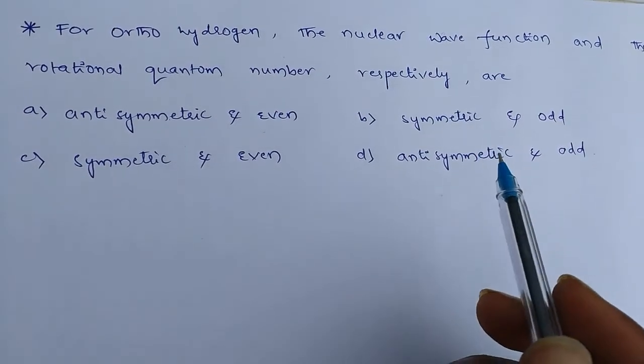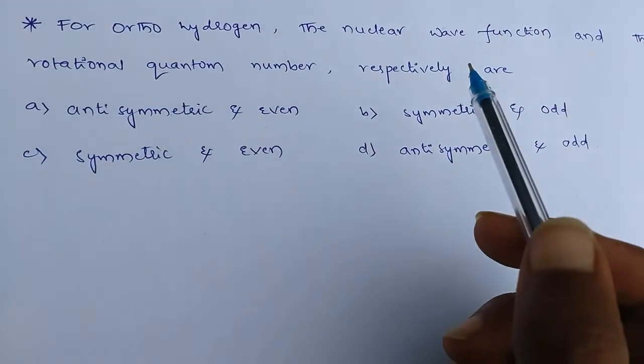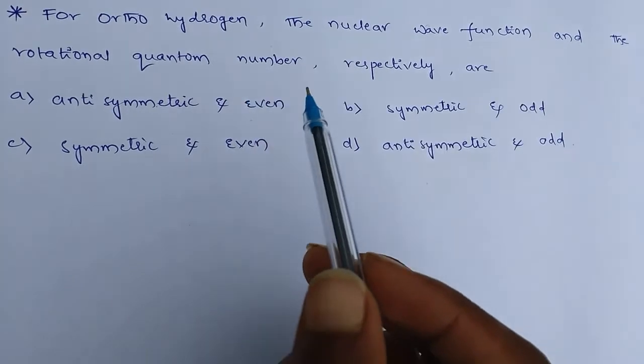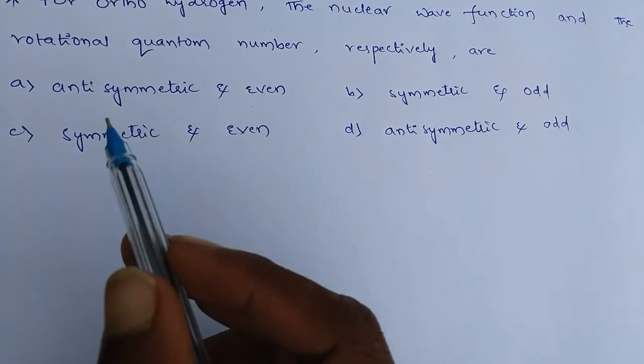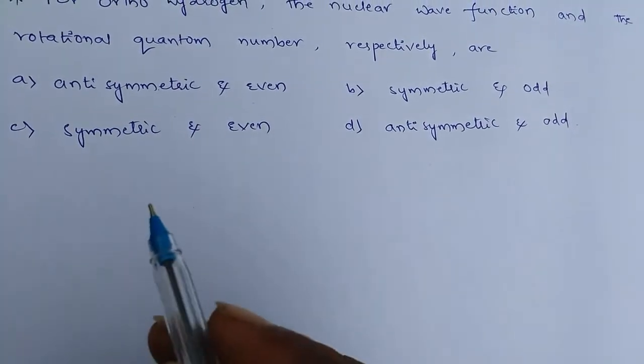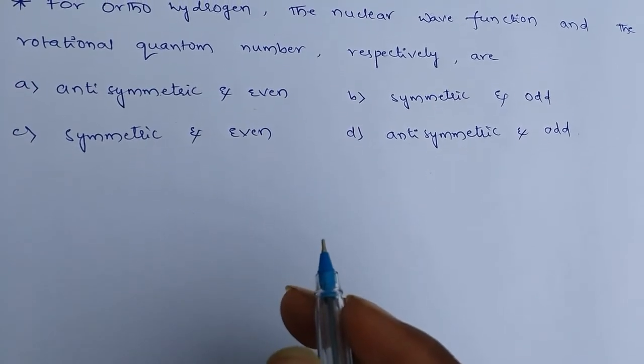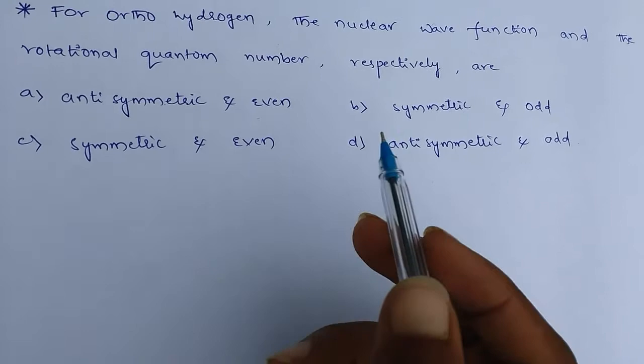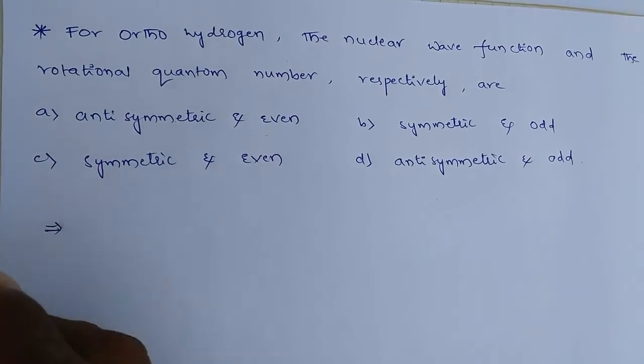This question appeared in GATE 2017. The question is: for ortho hydrogen, the nuclear wave function and rotational quantum number respectively are. So we have four options: a) Antisymmetric and even, b) Symmetric and odd, c) Symmetric and even, and d) Antisymmetric and odd. So which is the correct answer for the given problem?